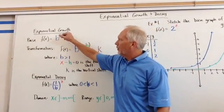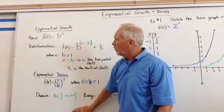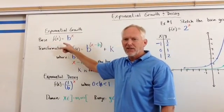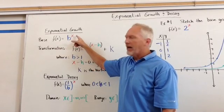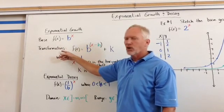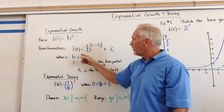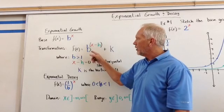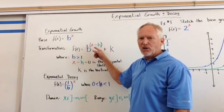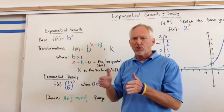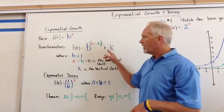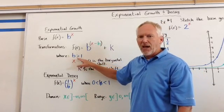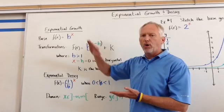We've got exponential growth. The base function is written as f(x) equals b to the x power. If we're doing a transformation, we'll have f(x) equals b to the (x minus h) plus k, where x minus h is responsible for the horizontal shift and k is the vertical shift. B in this case is greater than 1, so we're dealing with a growth model.